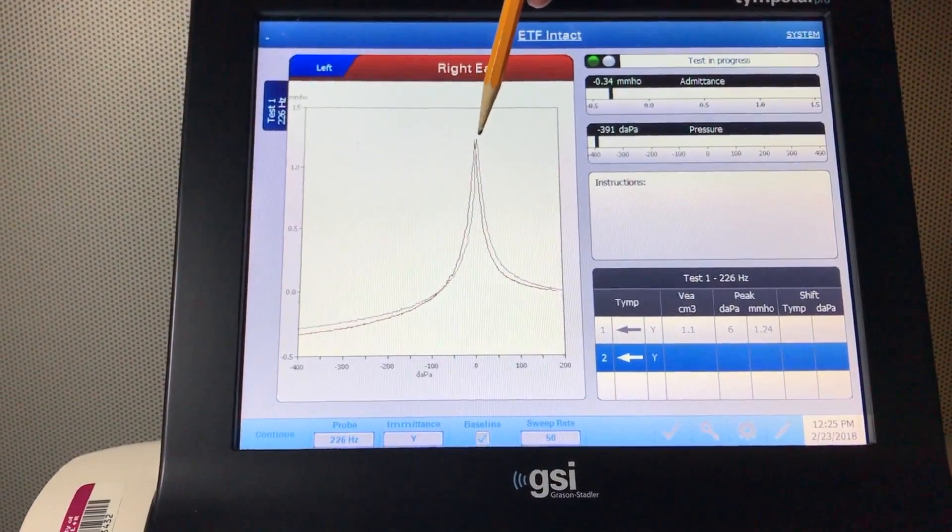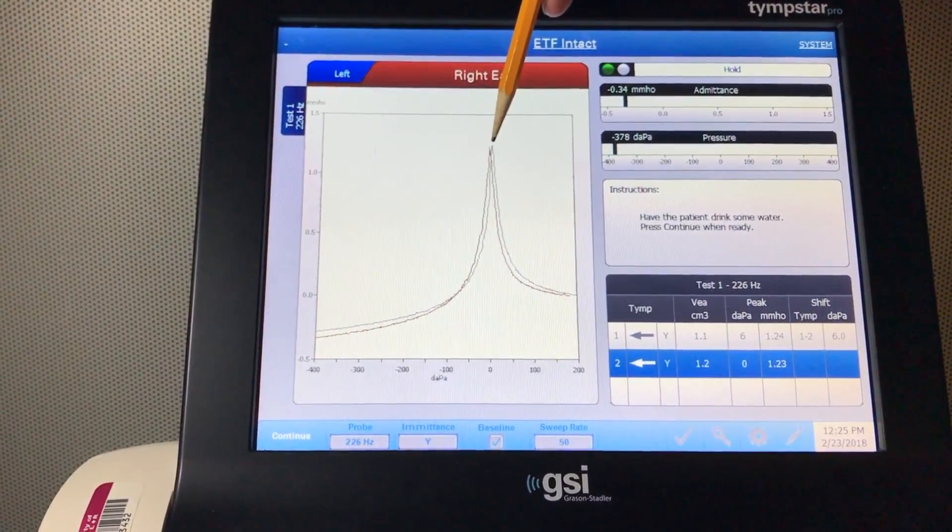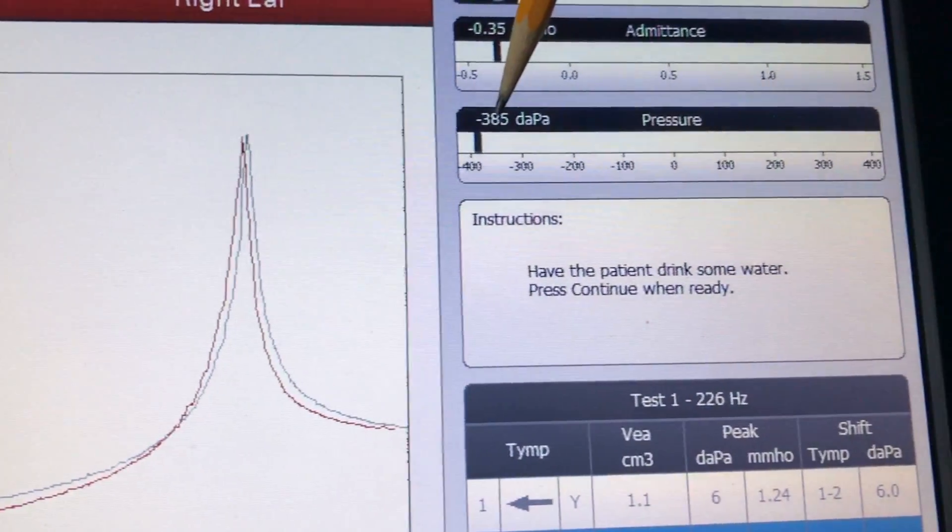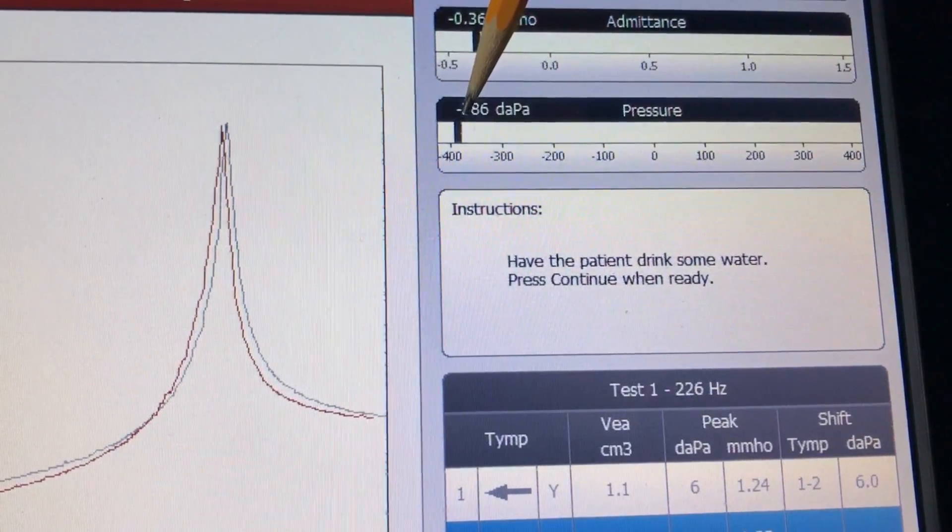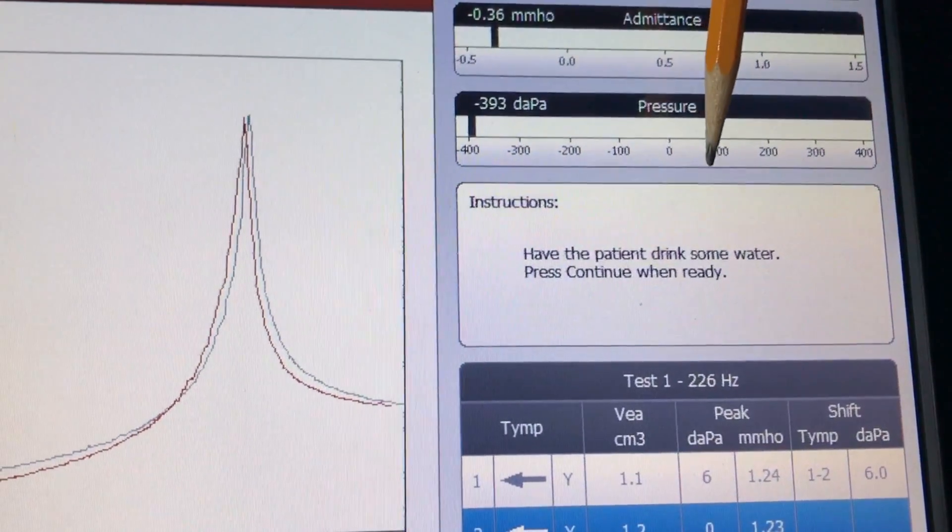As you can see here, the peak is now shifted to the negative side, and now the instrument creates a negative middle ear pressure which is minus 400 decapascal. Once the pressure is maintained in the ear canal, have the patient drink some water.